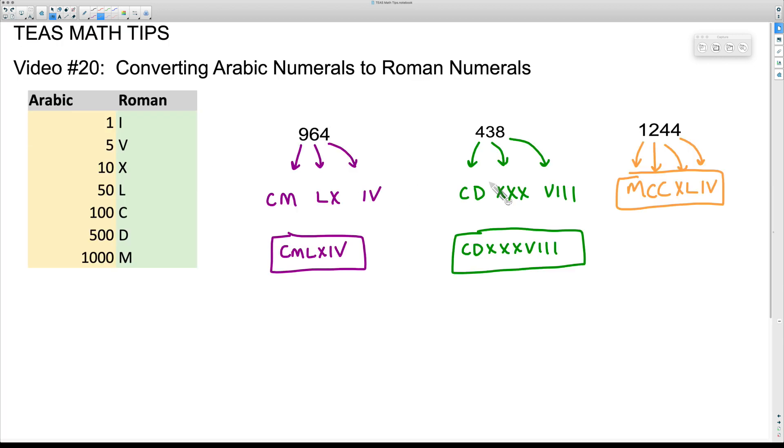There you have it, three examples of converting an Arabic numeral to a Roman numeral. The thing to keep in mind here is you don't want to put four of any Roman numeral beside each other. Now if you did go up to say 4000, and for the TEAS test you don't have to worry about this, but if we had 4368...